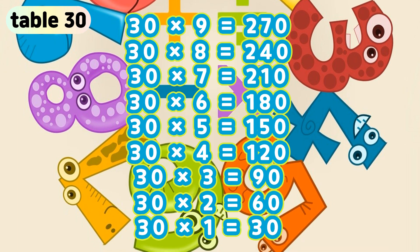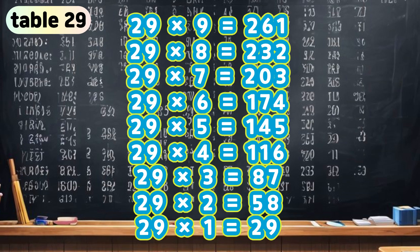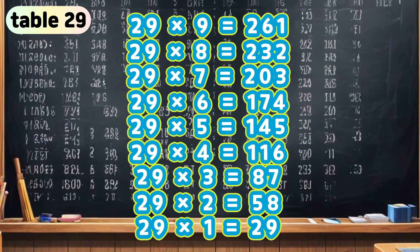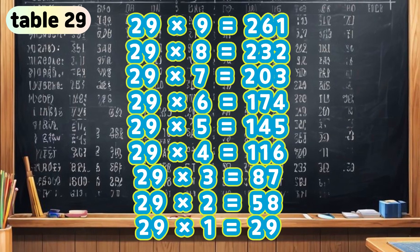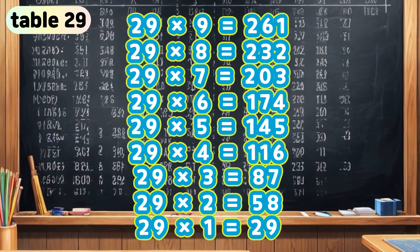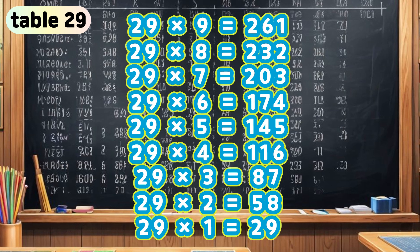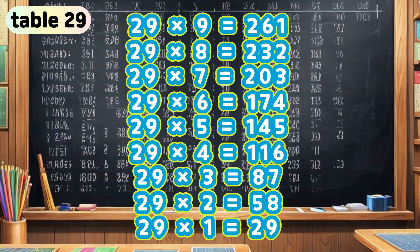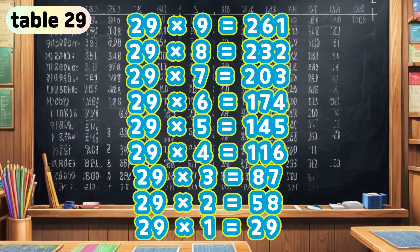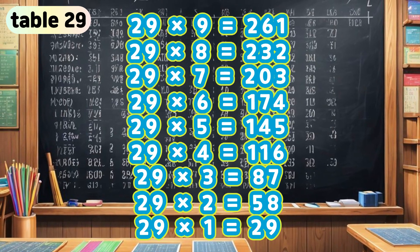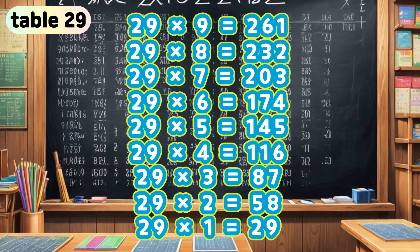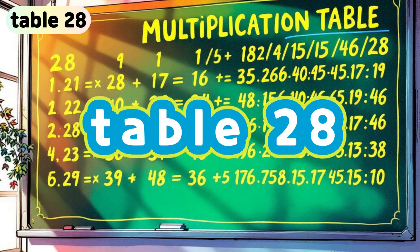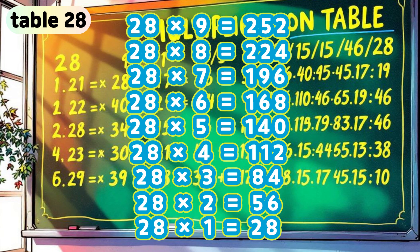30 times 1 is 30. Table 29. 29 times 9 is 261. 29 times 8 is 232. 29 times 7 is 203. 29 times 6 is 174. 29 times 5 is 145. 29 times 4 is 116. 29 times 3 is 87. 29 times 2 is 58. 29 times 1 is 29.